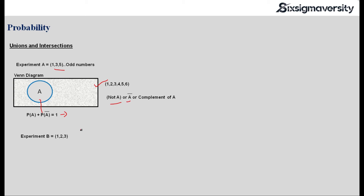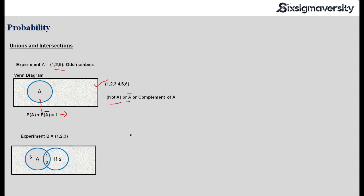Let me add another experiment B, which is 1, 2, and 3. In experiment A it was 1, 3, and 5. In experiment B it is 1, 2, and 3. A couple of digits are common here — 1 and 3 are common between experiment A and experiment B. So if I represent that in a Venn diagram, these two experiments would obviously overlap. These two circles will overlap and 1 and 3, which are common, will fall somewhere in this overlapping area. This is called intersection. This is also known as union, represented by U, which is A or B, and intersection is represented as an upside-down U, which is A and B.